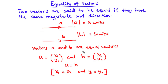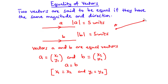One important thing you need to understand is that equal vectors may not necessarily start from the same point. However, they are still called equal vectors because the directed line segments are parallel. Now, let's consider two vectors: vector AB and then vector CD. This is point A, point B, with the arrow showing the direction.